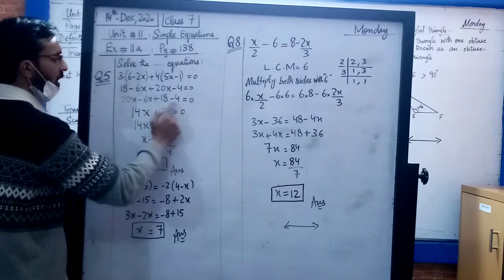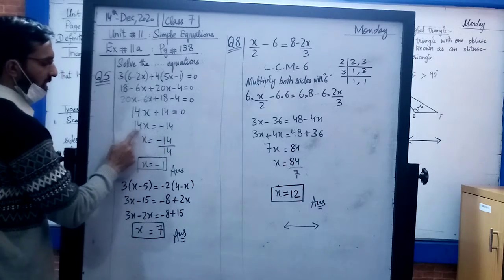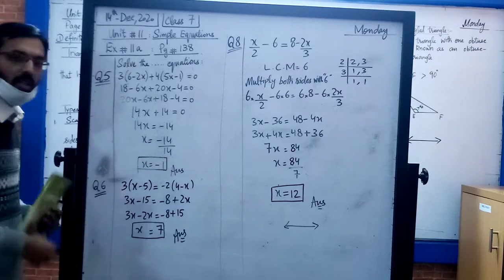So 14x equals minus 14. Now divide both sides by 14. When we cut 14 from both sides, x equals minus 1. That's the answer.